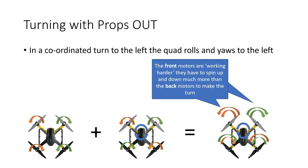What about if we're running props out? This is the same coordinated left turn but running props out. Again we have the right motor spinning up and the left motor spinning down, but this time we have front right and rear left spinning up, and rear right and front left spinning down. When we add those together, the situation is kind of opposite to what we saw with props in — this time it's the front motors that have to work harder, spinning up and spinning down more than the rear motors to make this coordinated left turn. In fact it's the front right motor that in some senses is working the hardest because it's having to spin up to do both parts of the move.